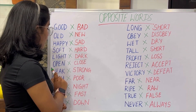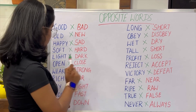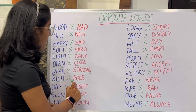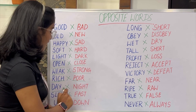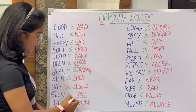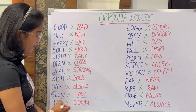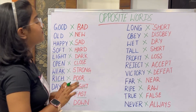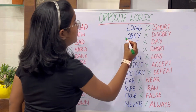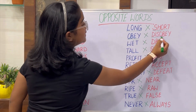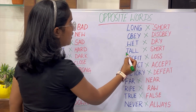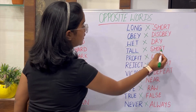Open and close, weak and strong, rich and poor, day and night, slow and fast, up and down, long and short, obey and disobey, wet and dry, tall and short.